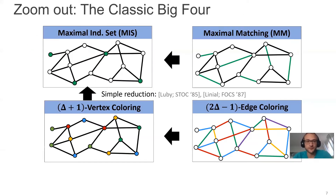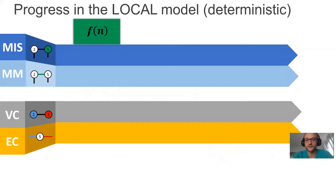Let's zoom out a little more. In this area, a lot of research has focused on four problems: maximal independent set, maximal matching, vertex coloring, and edge coloring. There are reductions between these problems and they've been studied a lot. One area people have looked at is the complexity as a function of n, the number of nodes. Due to a big breakthrough, we now know that all of these problems have polylogarithmic deterministic algorithms. This is usually considered efficient and was a really big breakthrough.